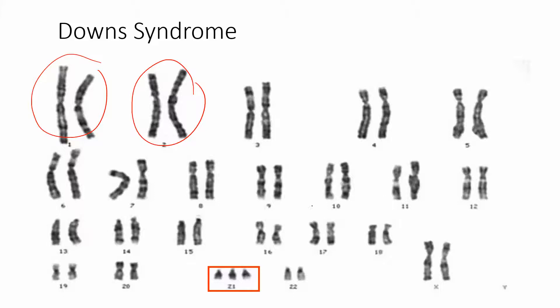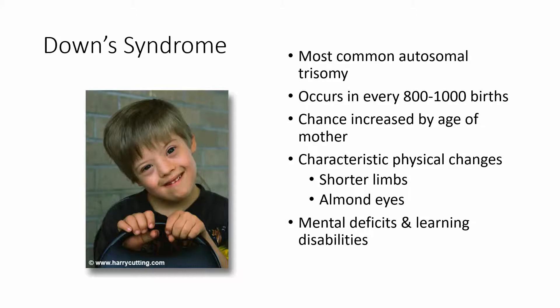There is a trisomy of chromosome 18 — people born with trisomy 18 have severe birth defects and physical defects that impair their survival. People with trisomy 18 tend not to survive past a few years of life. Trisomy 21, though, is much less severe. People with Down syndrome are able to survive past childbirth, past childhood, and a great deal of them live very long, very happy lives.